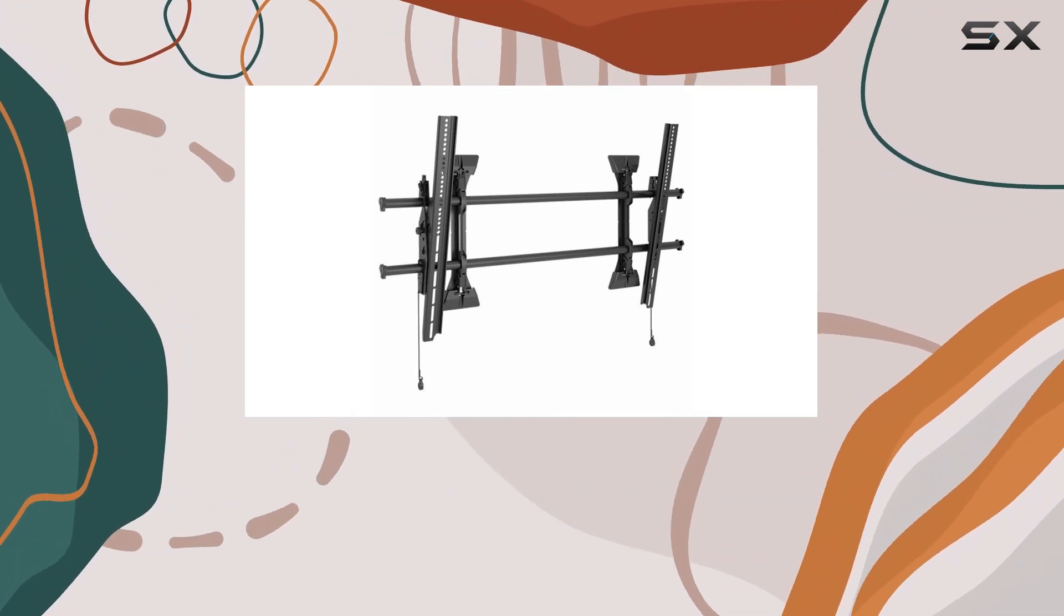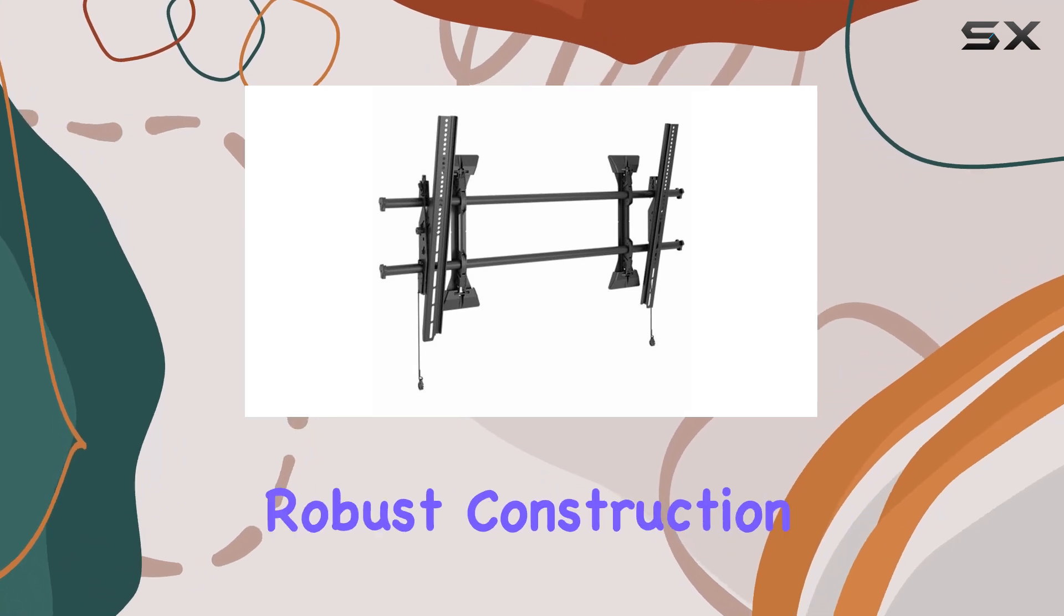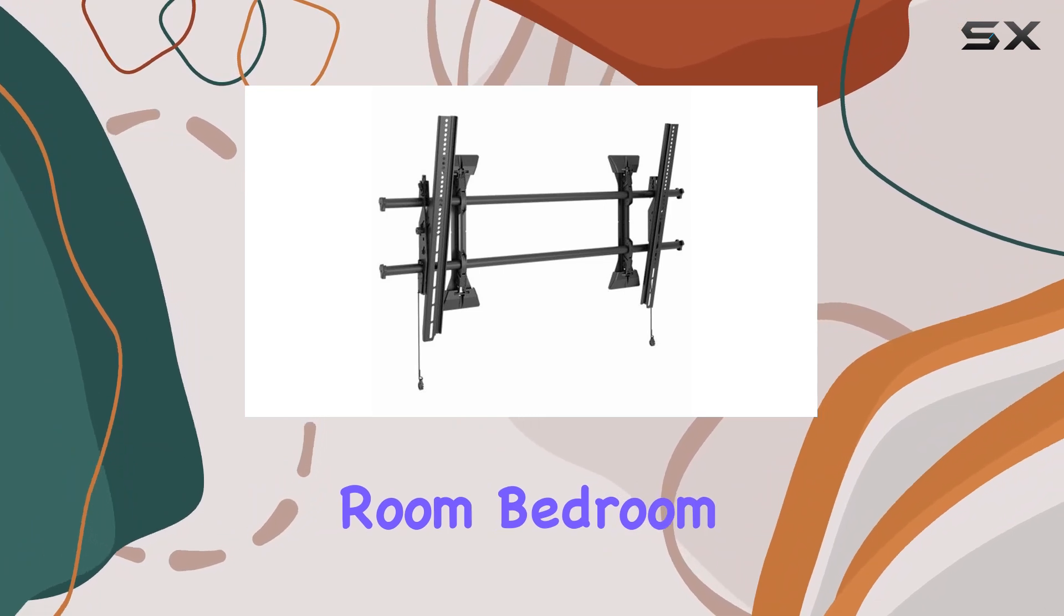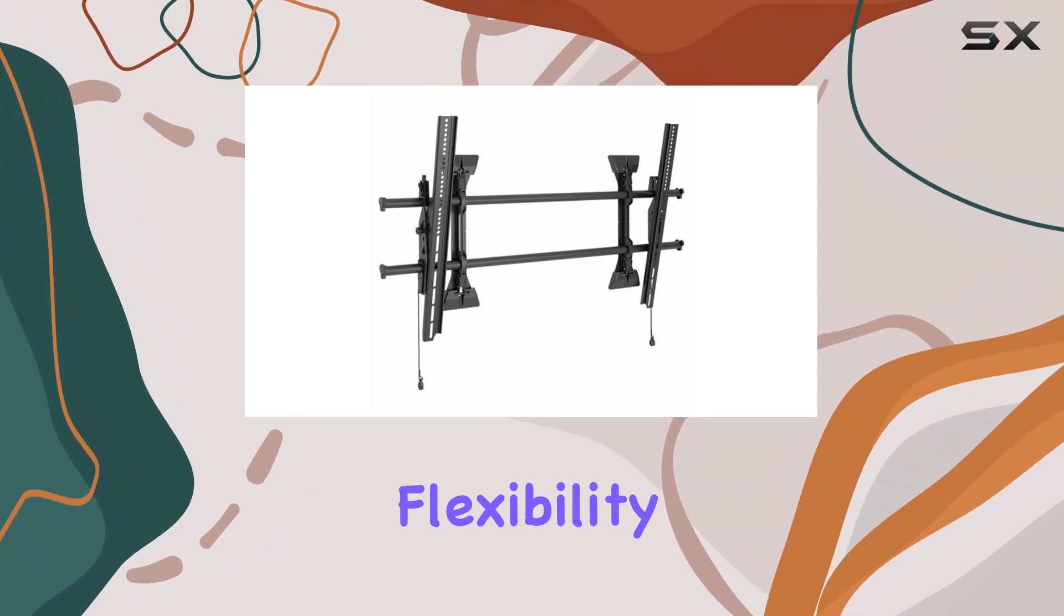The package weighs approximately 11.816 kilograms, reflecting its robust construction. Whether you're mounting a television in your living room, bedroom, or entertainment area, the Chief XTM-1U provides flexibility and durability.